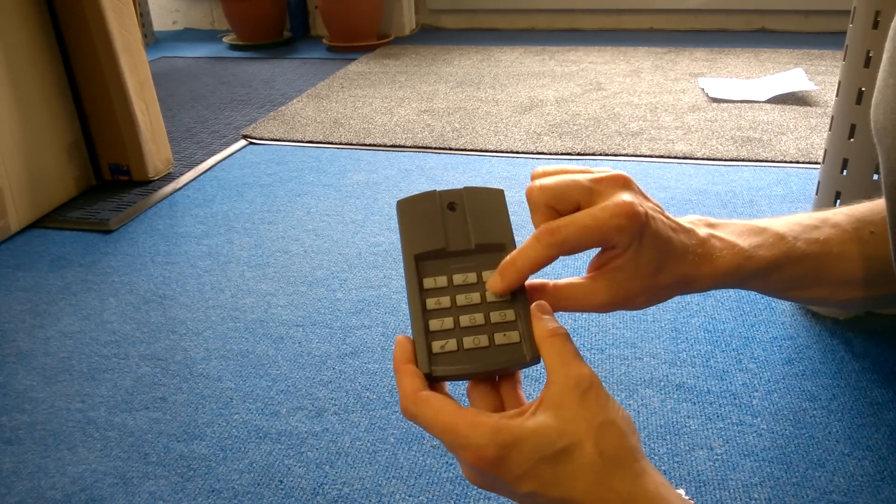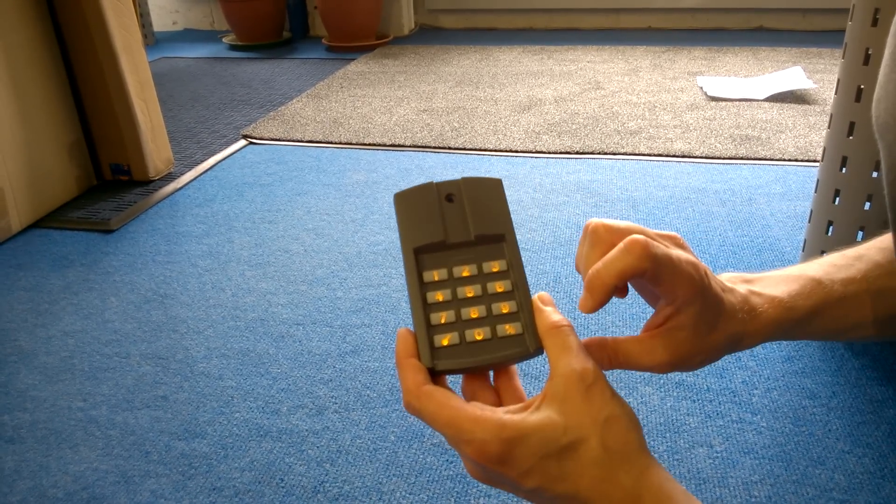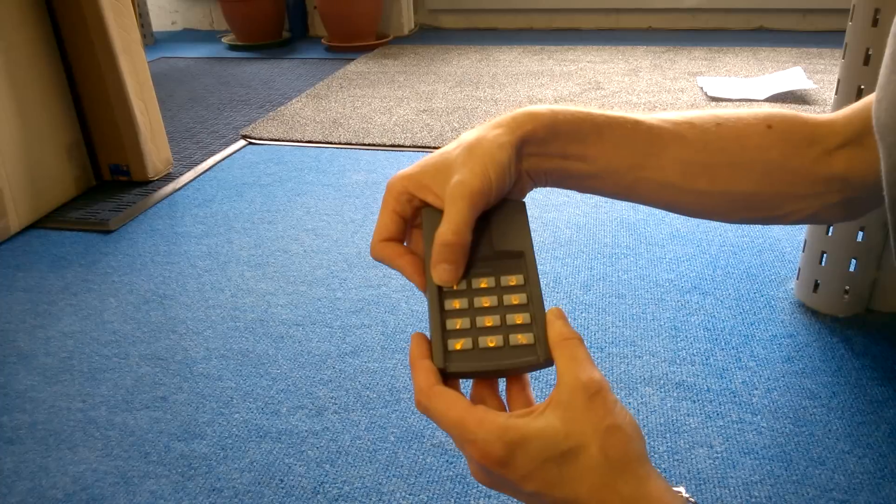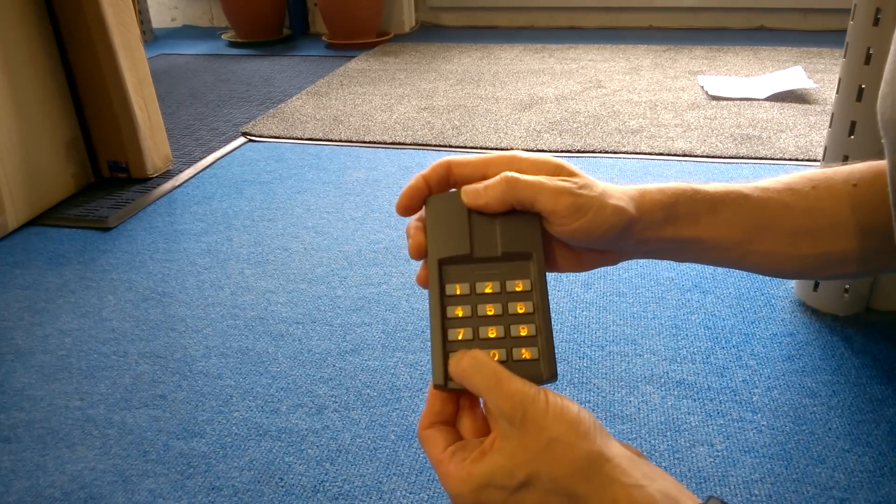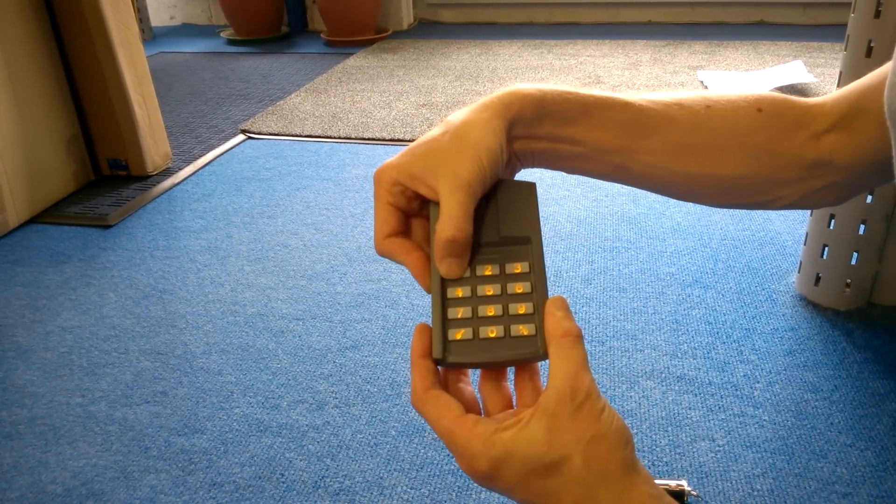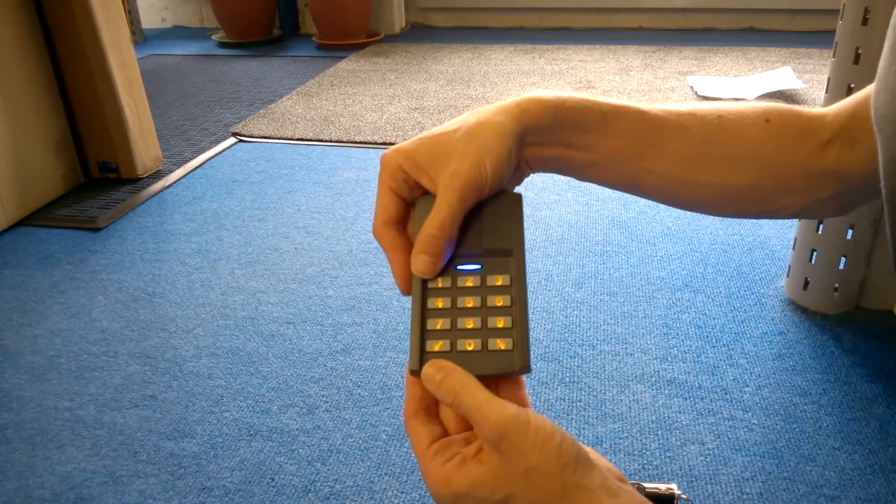So the first thing to do is press the key so you illuminate the keypad, press the key button, press number one for memory space one, press the key button again. We're going to put our code in of one, one, one, one. Press the key button again.